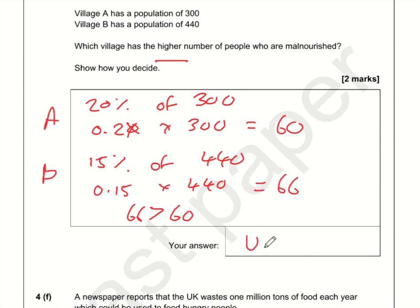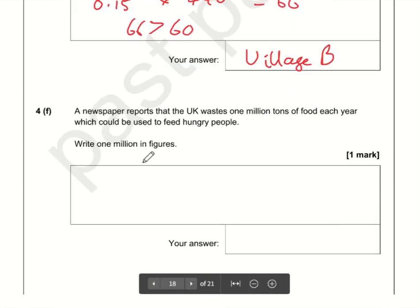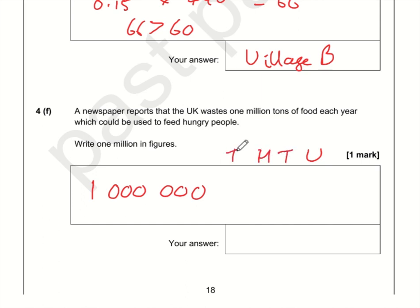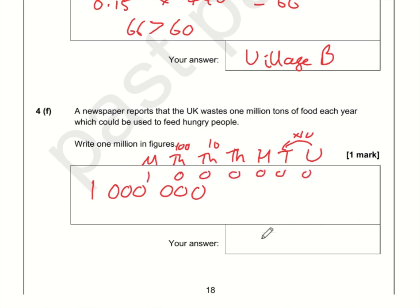This question asks you to write 1 million in figures. A million is simply a 1 with six zeros. If you're unsure, build up through the number system: units, tens, hundreds, thousands, ten-thousands, hundred-thousands, millions — so that's 1,000,000.